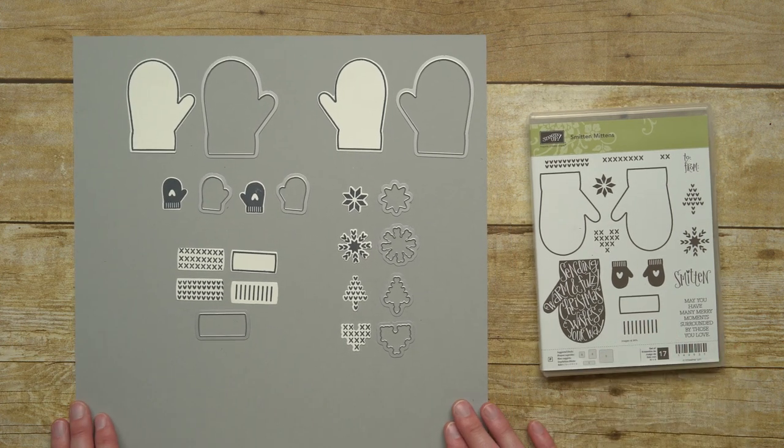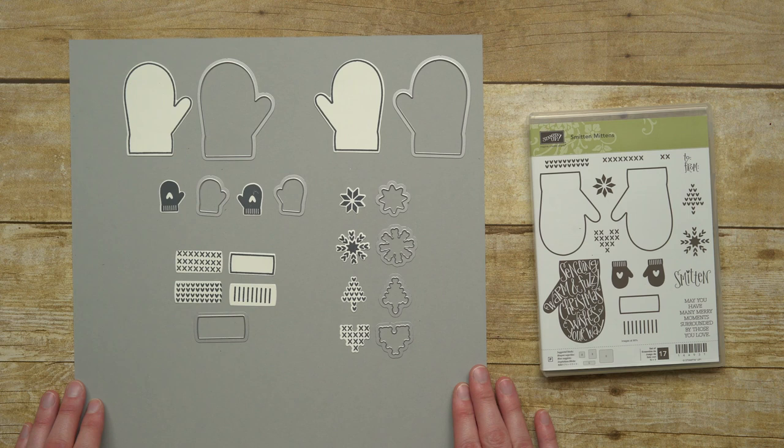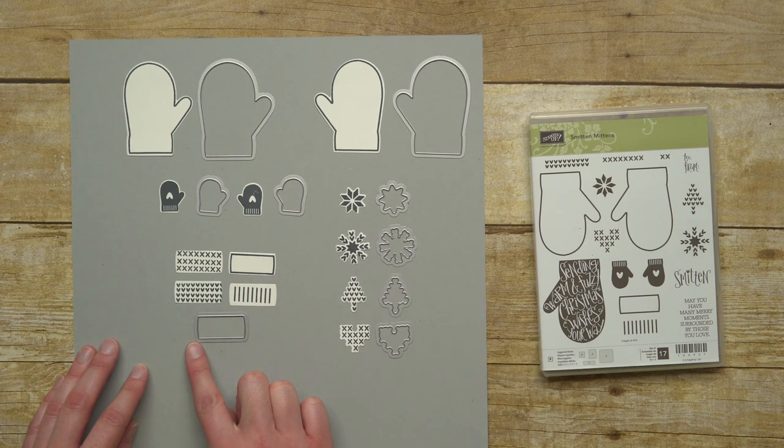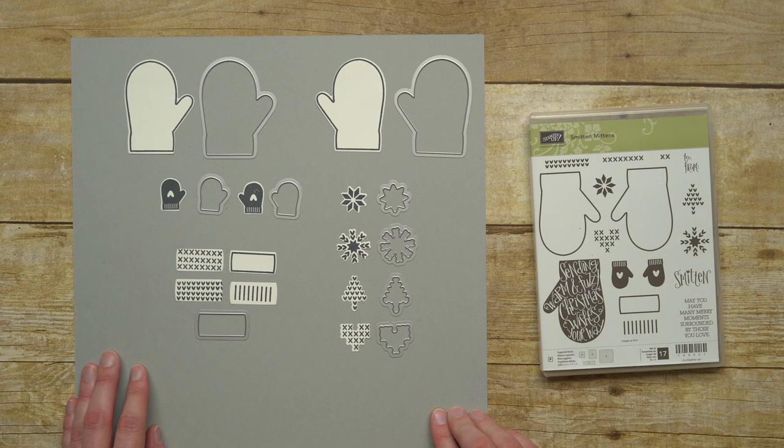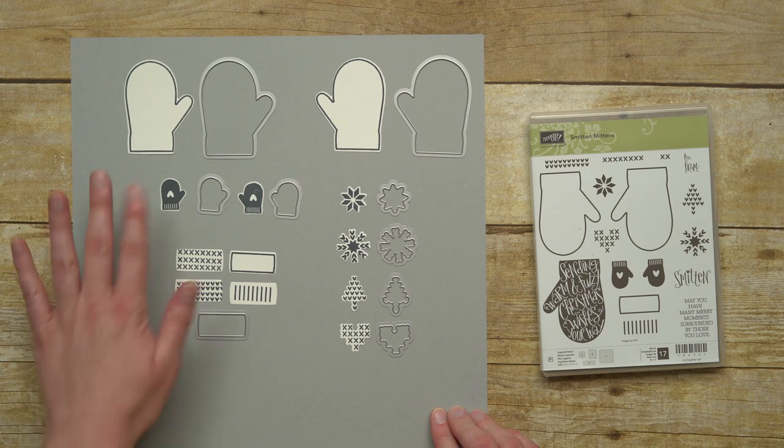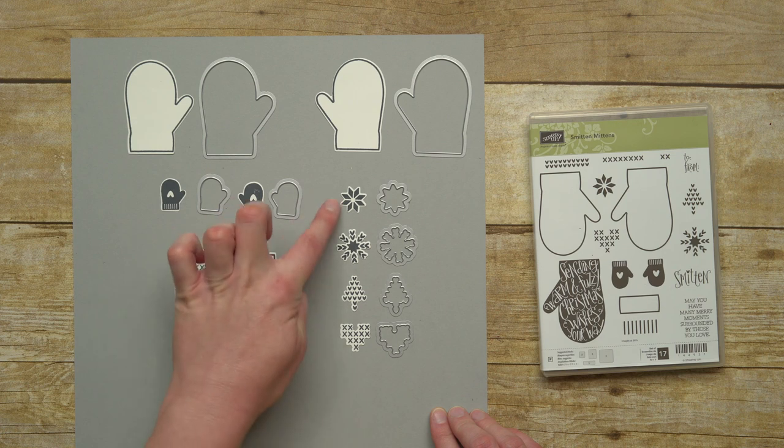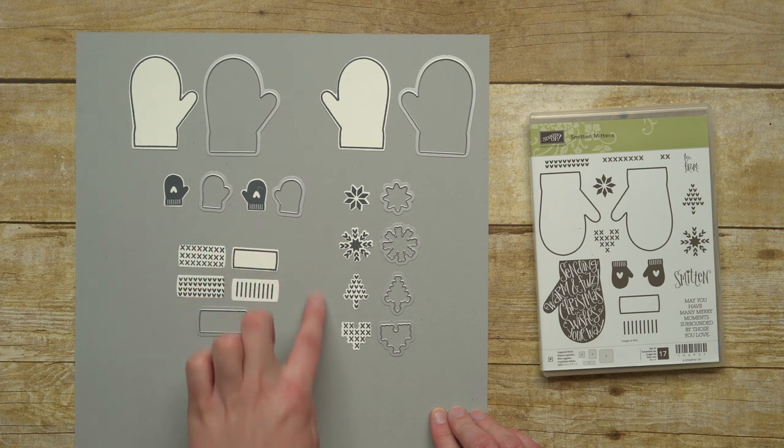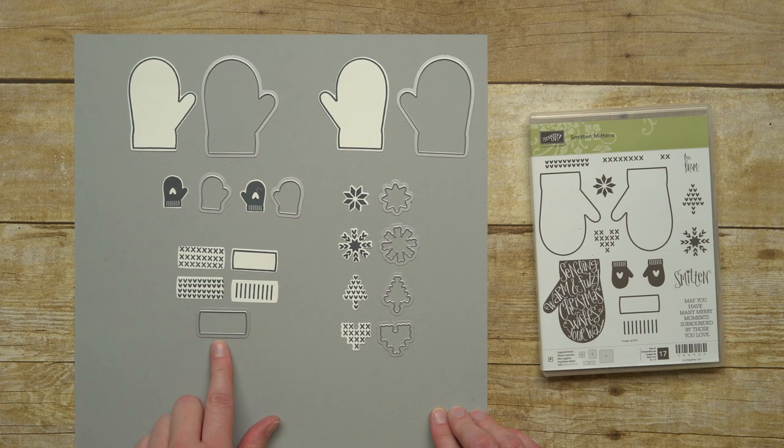The framelits are designed to work together to dress up the mittens even more and I've made this little chart here to show you how some of the pieces work together. So we have our mittens and we have our little knitted embellishments to go on the mittens and our cuff pieces here.